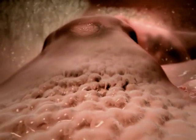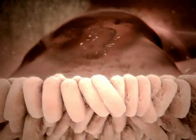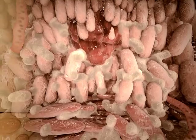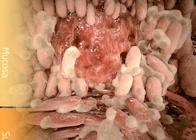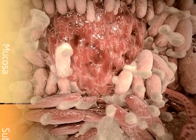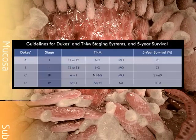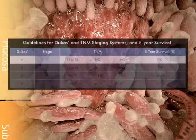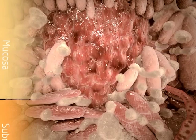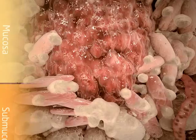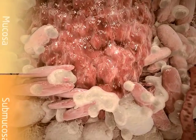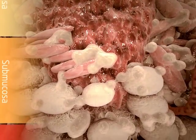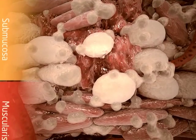Firstly, the cancer invades the mucosa, the layer closest to the inner surface of the bowel, and extends into the submucosa. From there, it may extend into the muscularis layer and the serosa, the outer layer of the bowel wall.